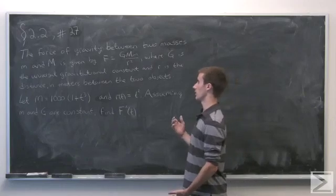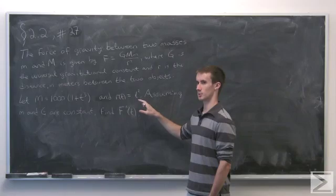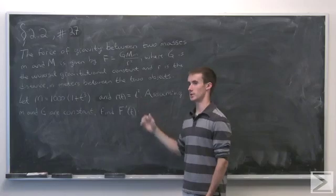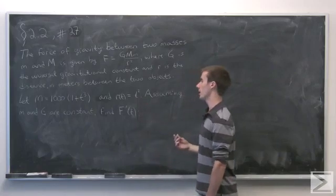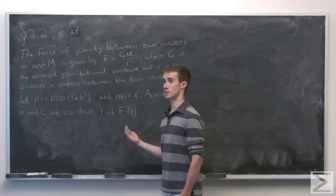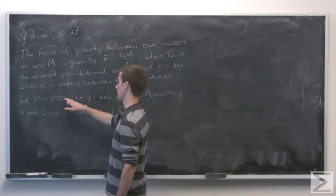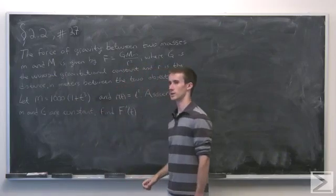Now, we're going to assume that the distance between the objects is increasing. So we have r of t is equal to t squared, where t is time, and we're assuming that one of the masses is also increasing, and the mass at time t given by the formula 1,000 times 1 plus t cubed.